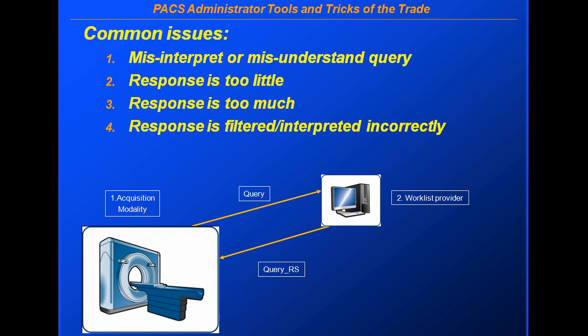Number two, which is relatively common as well, is that the response might be too little. I do a query and not all the information comes back that I asked for. For example, I want my accession number and patient ID, but also the name and maybe the modality that I was scheduled for, and the information that comes back may be only half of what I requested.